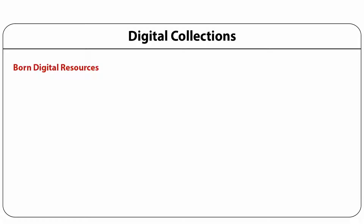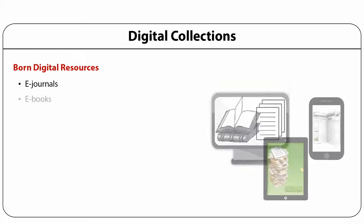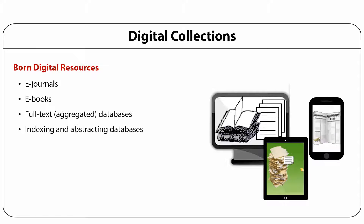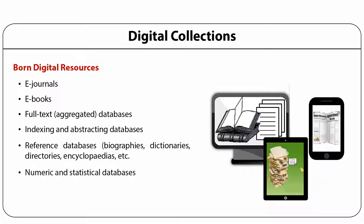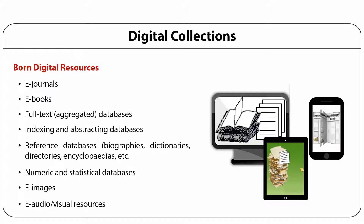Digital collections are grouped into two categories. One is born digital resources created in the library or accessed from the publisher, aggregator, academic press, etc., which includes e-journals, e-books, full-text databases, indexing and abstracting databases, reference databases — which include biographies, dictionaries, directories, encyclopedias, etc. — numeric and statistical databases, e-images, e-audio, and visual resources.